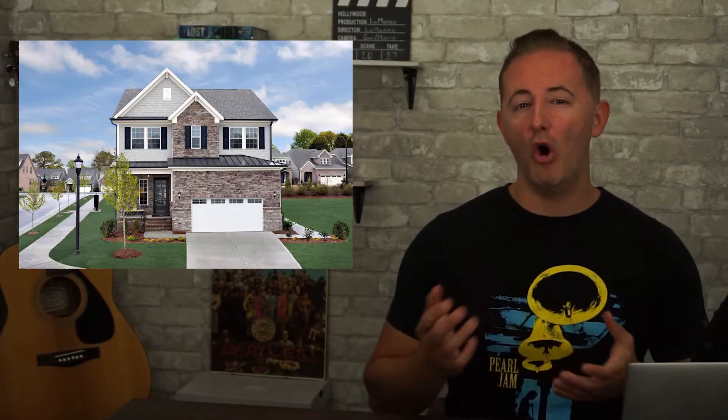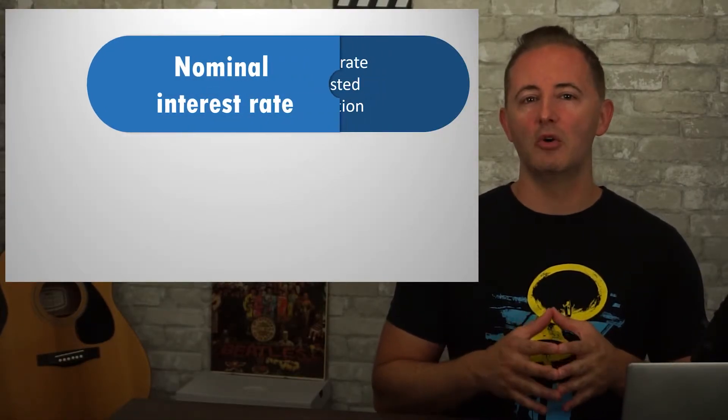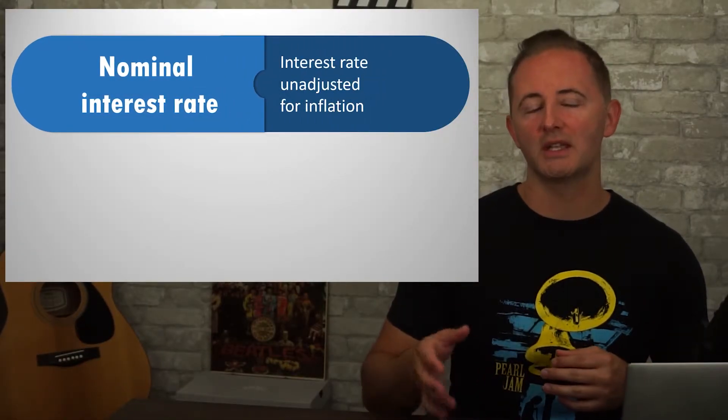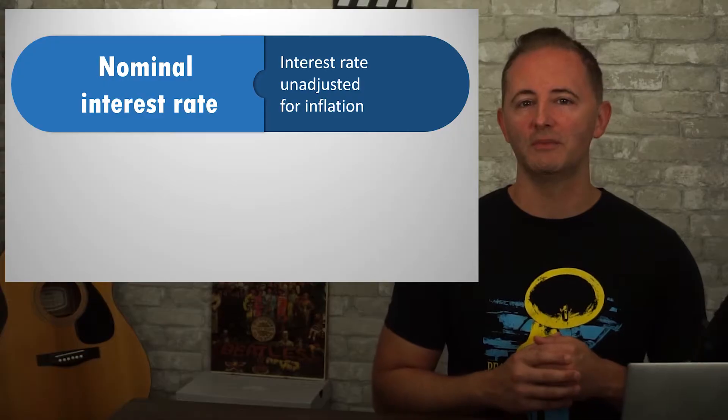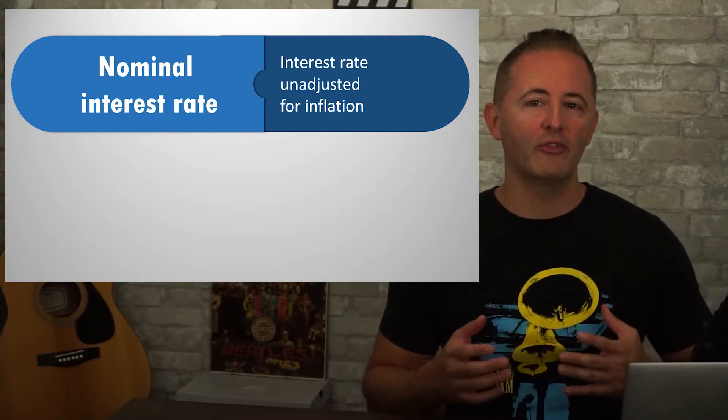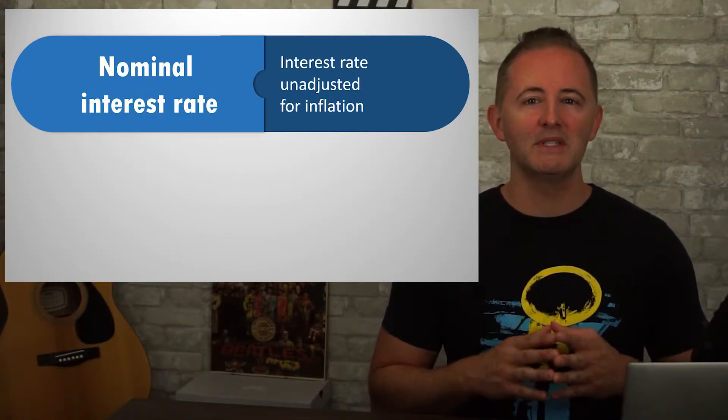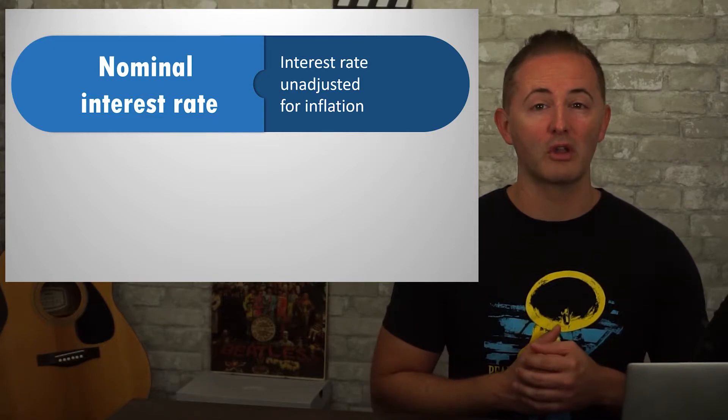As I'm making this video, the nominal interest rate for a new home is about 6.5%. It's about 3% to 8% for new cars, 4% for undergrad student loans, and so on — these are all nominal numbers. A nominal interest rate is the interest rate on a loan unadjusted for inflation. Because it doesn't account for inflation, it's missing a really important part of the story.